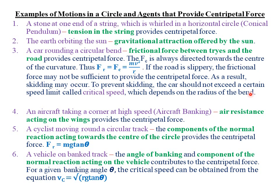The fourth example is aircraft banking — that is, when an aeroplane is taking a corner at very high speed. The agent that provides the centripetal force is the air resistance acting on the wings of that particular aircraft. If there were no air resistance, the aircraft would not be able to take the corner safely. You need air resistance acting on the wings for the aircraft to bank effectively.